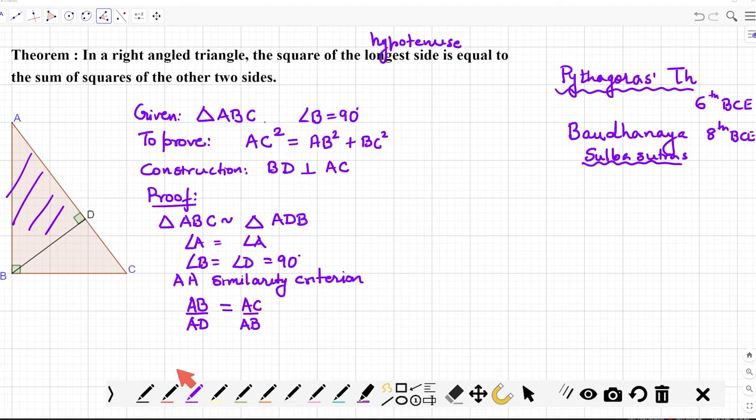So AB upon AD is going to be equal to AC upon AB. These are the two ratios for the two triangles. Can I not rearrange them and write as AB² is equal to AC into AD? So there is this first relation and let us name it as one.